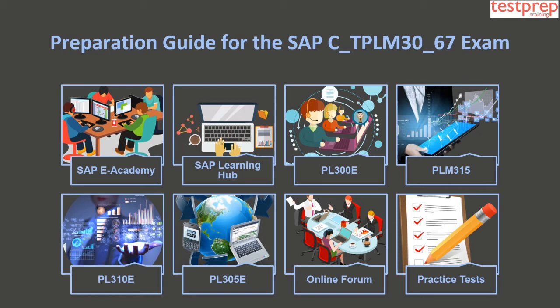Learning Resource 4 is PLM315, about Customizing Maintenance Processing. In this three-day course you will learn skills like order costing, settlement with maintenance orders, and organizational units. Learning Resource 5 is PL310E, about Maintenance and Service Processing Preventive, covering maintenance planning, time-based strategy, single cycle maintenance planning, and management of task lists.